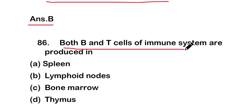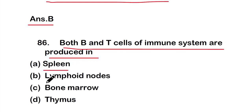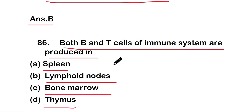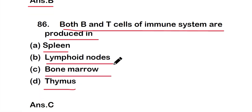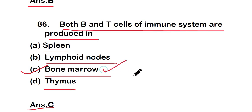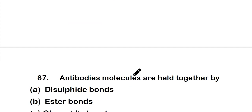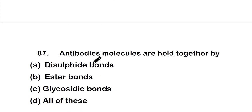Question number 86: Both B and T cells of the immune system are produced in — option A: spleen, option B: lymphoid node, option C: bone marrow, or option D: thymus. The right answer is option C — both B and T cells are produced in the bone marrow.